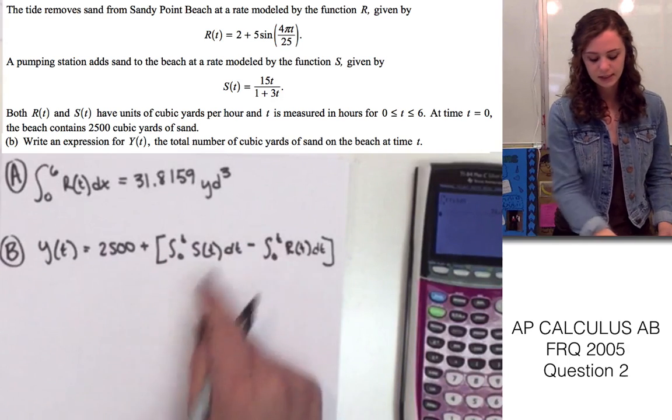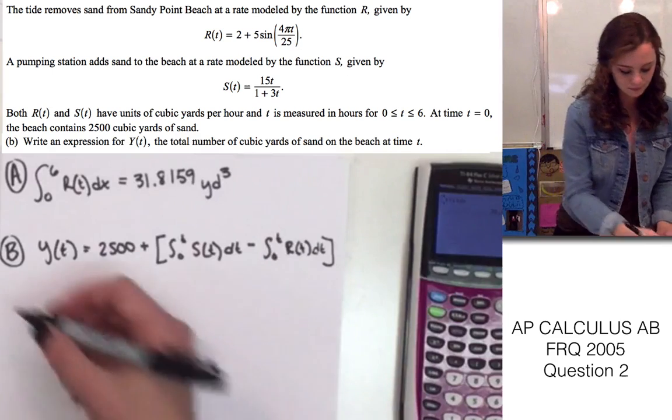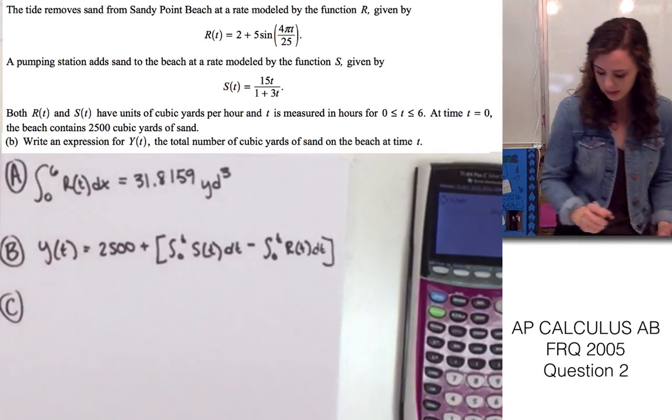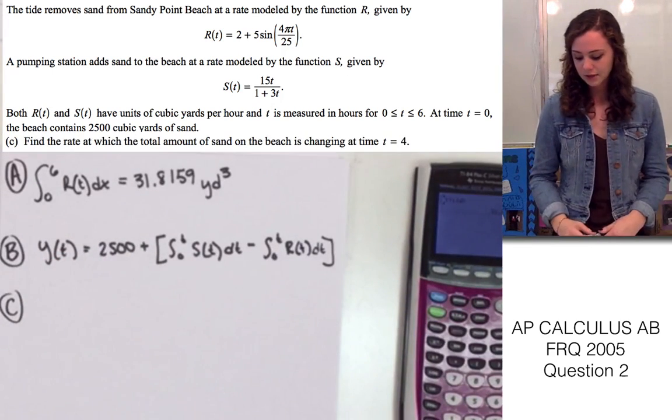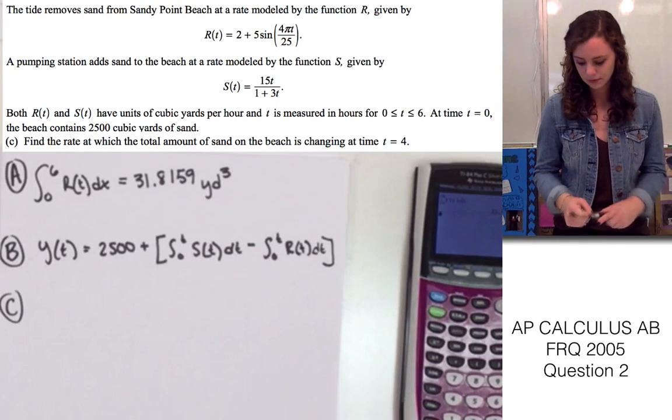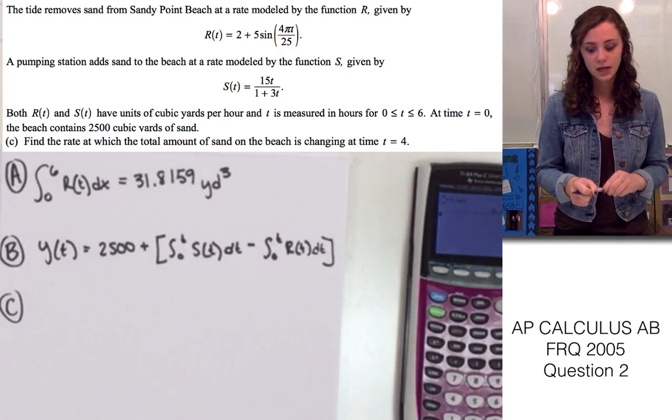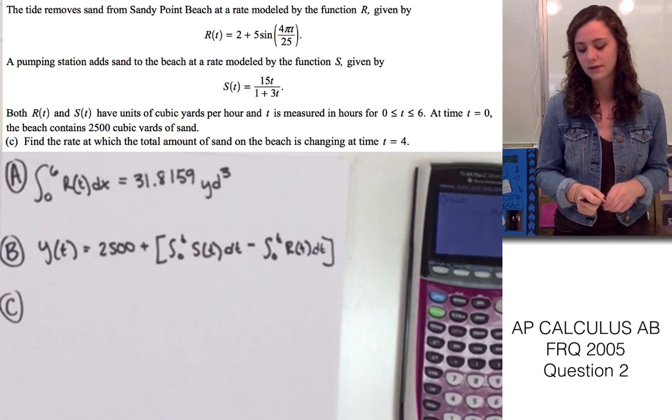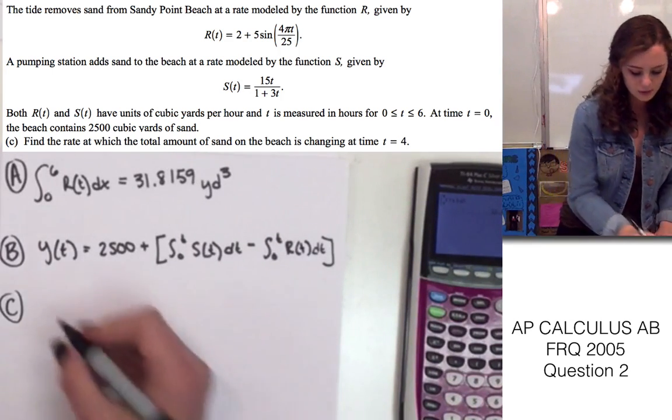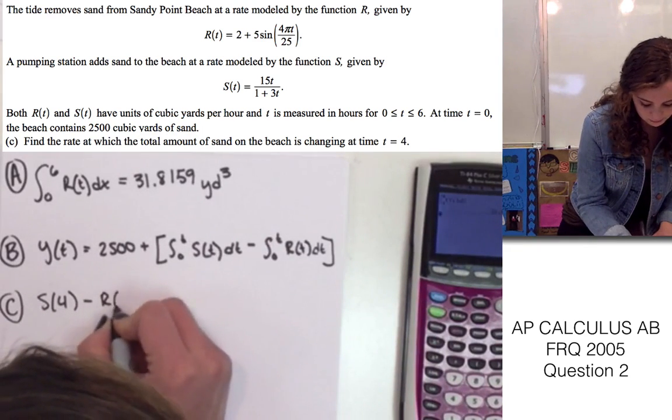That's why we have t here instead of actually a value for t. Part c says, find the rate at which the total amount of sand on the beach is changing at time t equals 4. Since it's amount of change, we can just use the functions given for r of t and s of t. We're going to do s of 4 minus r of 4.